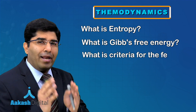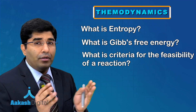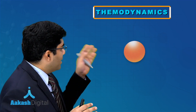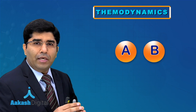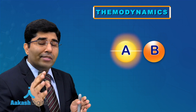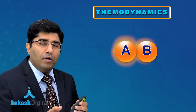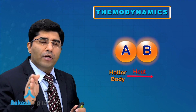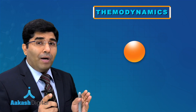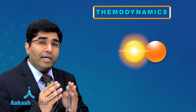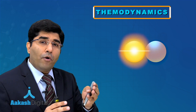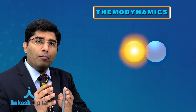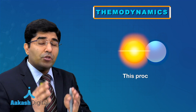We will talk about entropy and Gibbs free energy, which will help us know whether a reaction is feasible or not. Starting from the basics: if the temperature of sphere A is more than sphere B, when they come into contact, heat flows from sphere A to sphere B — heat always flows from a hotter body to a colder body. But why can't heat flow from the colder body to the hotter body?